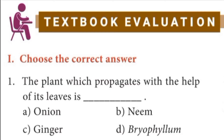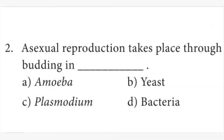First question: the plant which propagates with the help of its leaves is dash. Answer is D option, Bryophyllum. Second question: asexual reproduction takes place through budding in dash. Answer is B option, yeast.